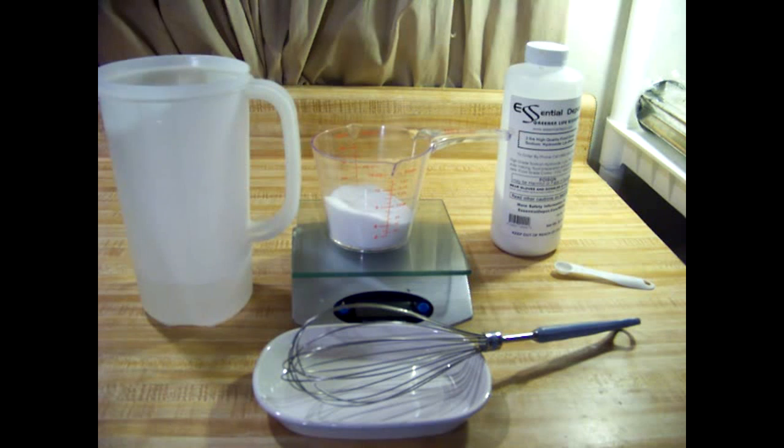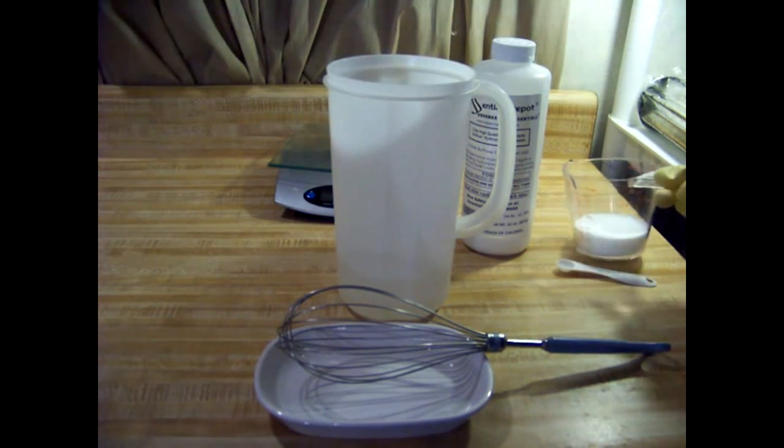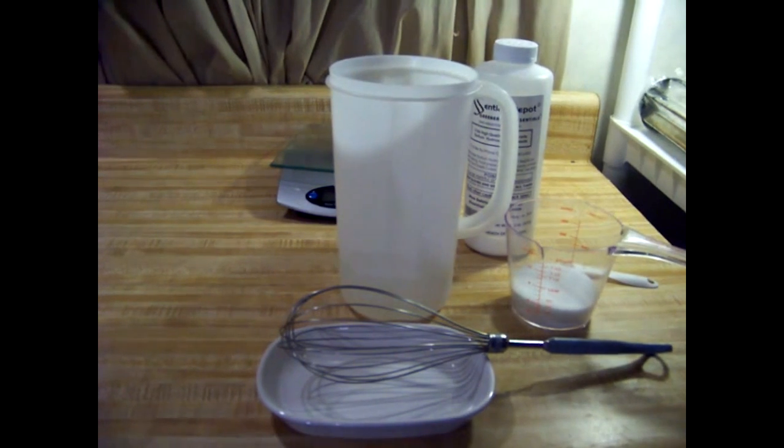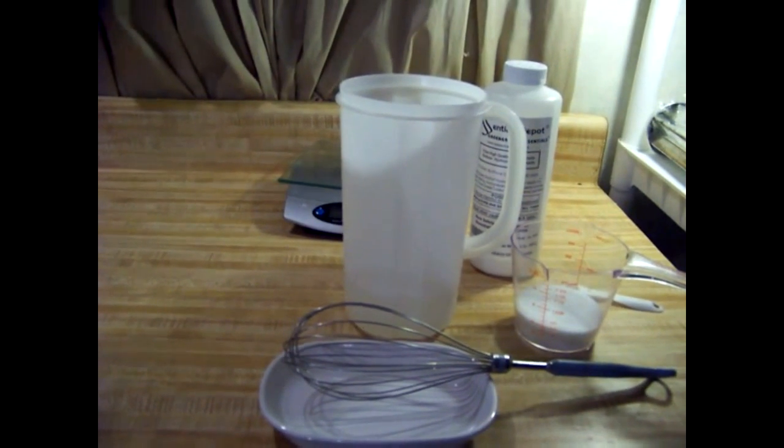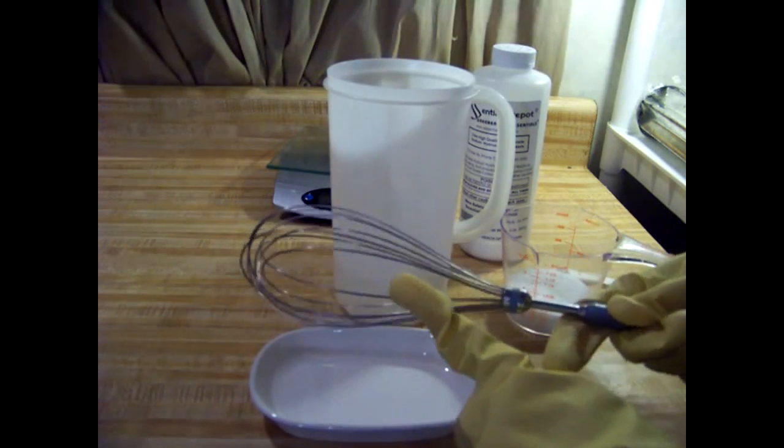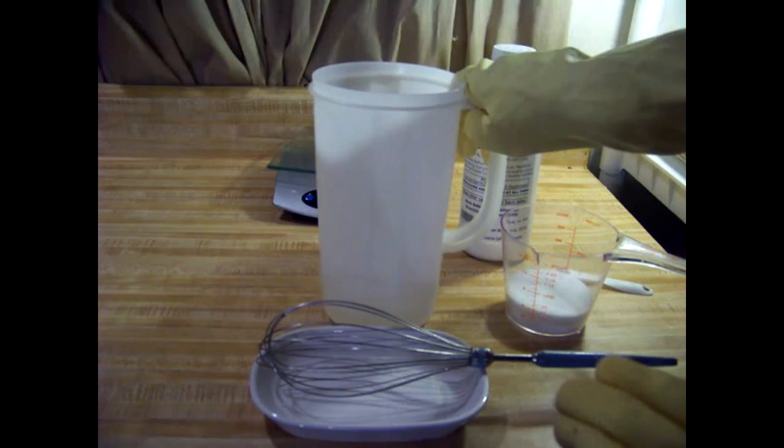Now we're going to add the lye to the water. You want to add the lye to your container slowly. You always want to use a stainless steel whisk. Lye can get over 200 degrees hot.